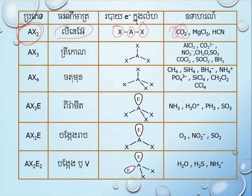For example, an atom with 2 bonding pairs, Magnesium Chloride, HCl — this is also the atom in 2 pairs, except for AXP.